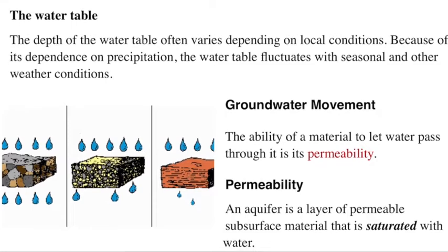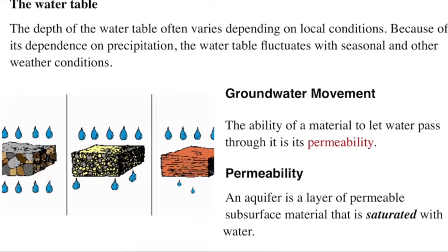The water table can be very deep or very shallow. A lot of times it has to do with how much water is falling on it, and also whether it's sitting on a rock that water can't pass through. If you have a basement rock — like the bottom of a swimming pool — where water is sitting on top of it, that's an impermeable rock. The permeability of a material is whether or not water can pass through it. Some materials allow water to pass very readily, and some are considered impermeable. The more impermeable a rock layer is under the water table, the more likely water will sit above it.